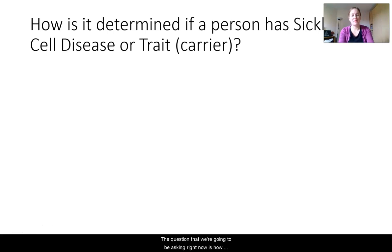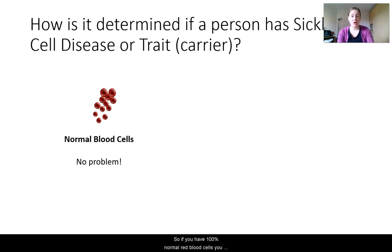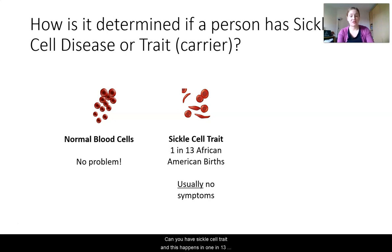The question we're going to be asking right now is: how do we determine if a person has sickle cell disease or has sickle cell trait and is a carrier of sickle cell disease? Well, we're going to be looking at their red blood cells, which are very important for carrying oxygen throughout your body. If you have 100% normal red blood cells, you don't have sickle cell disease or sickle cell trait. If some of your red blood cells are sickled and some are normal, then you have sickle cell trait.